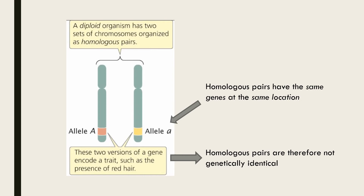For example both of the chromosomes in this homologous pair have the allele for hair colour at the same location, but one chromosome may have the red hair allele represented by the uppercase A whereas the other chromosome has the blonde hair allele represented by the lowercase a.